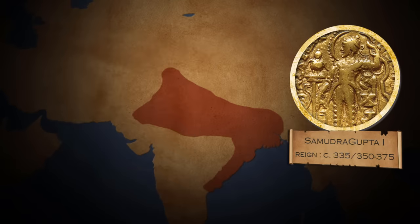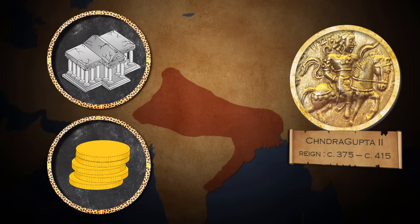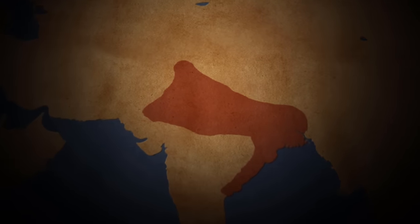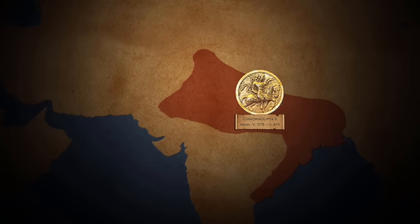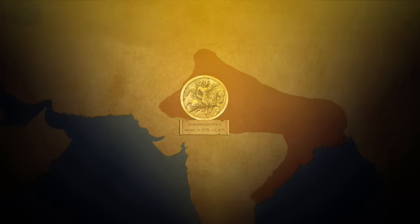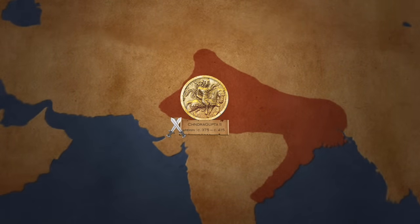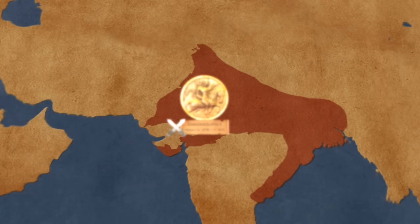Between 376 and 415, Chandragupta II strengthened the administration and encouraged commerce. Historical and literary evidence shows that Chandragupta II, called the Son of Valor, achieved military success against western satraps who ruled in west and central India. By doing so, the empire expanded to the coast of the Arabian Sea.